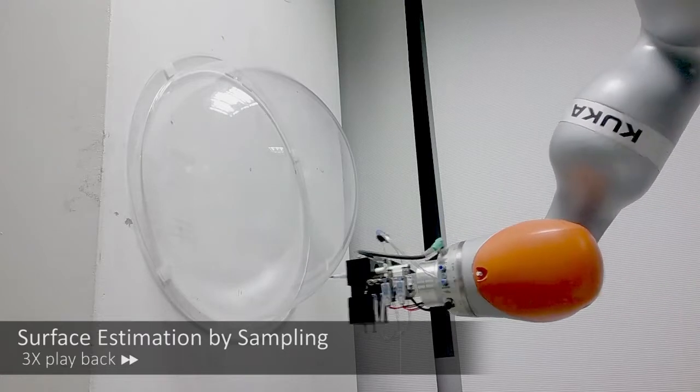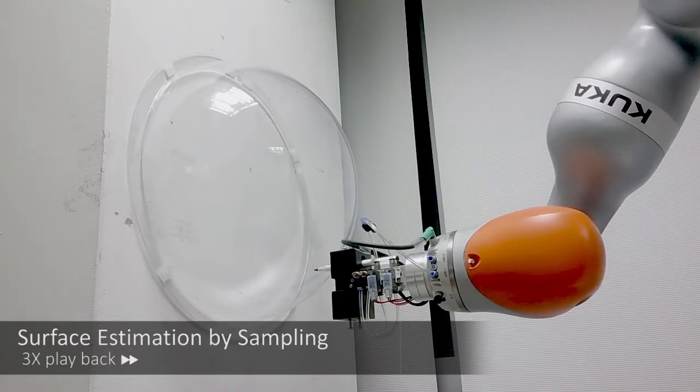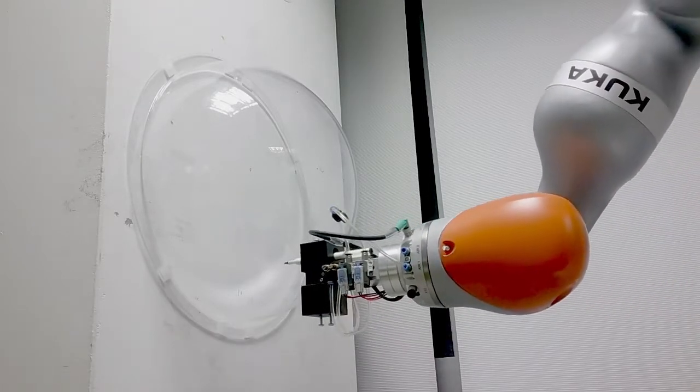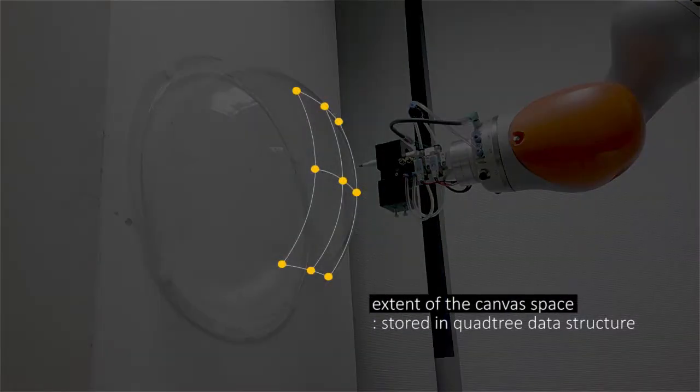Before kicking off the drawing process, the robot begins by sampling an extent of the canvas space. Those sampled points are stored in a quadtree data structure.